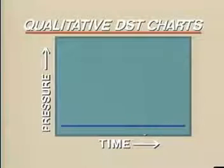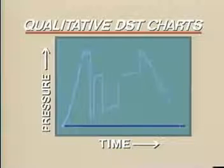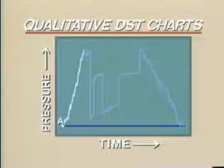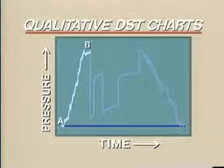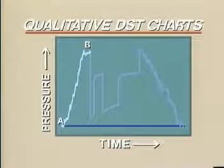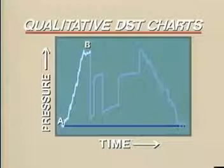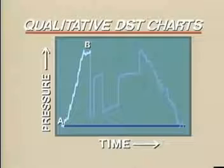From what we stated earlier, we recognize this to be a typical DST chart. A to B on the chart represents the buildup in hydrostatic pressure as the test tools are run into the hole. The line is not smooth because of pressure surges which occur as each connection is made, because of tight spots encountered in the open hole, or because of delays required to add cushion or repair surface equipment.